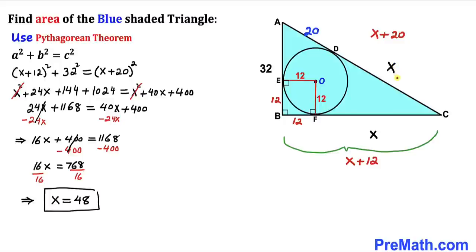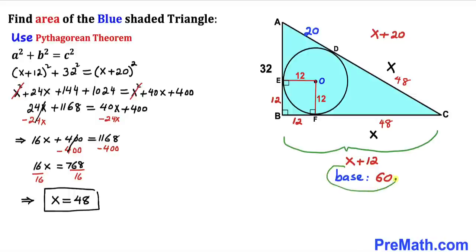We've figured out X = 48. So base BC = 48 + 12 = 60 units. Therefore the base of this blue right triangle is 60 units and its height AB is 32 units.